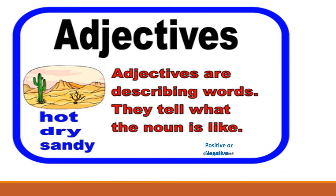It's good to first revise what adjectives are. Adjectives are describing words — they tell what the noun is like. They tell us something about a noun; it might be positive or negative. For example, the soup is very hot. Hot is the quality of soup, so soup is the noun and hot is its adjective.